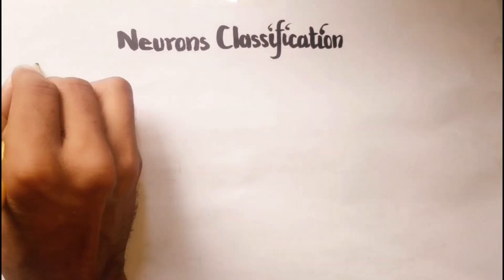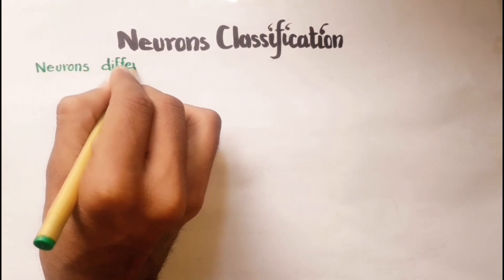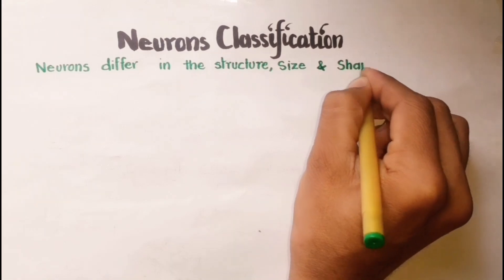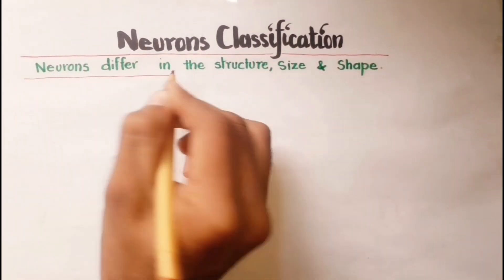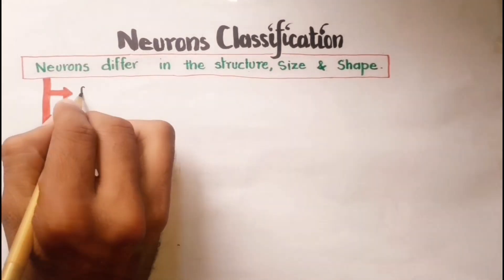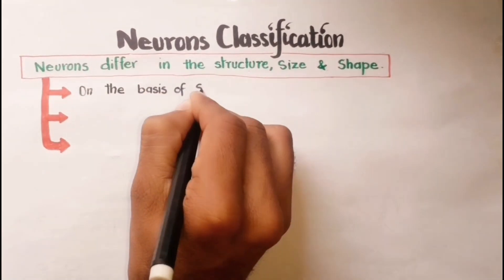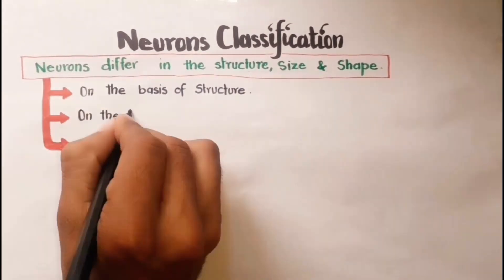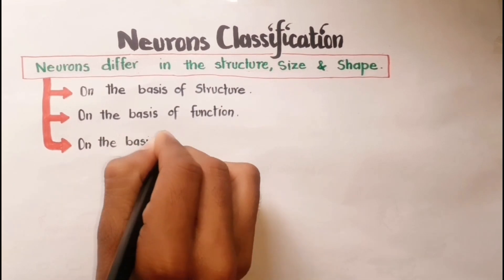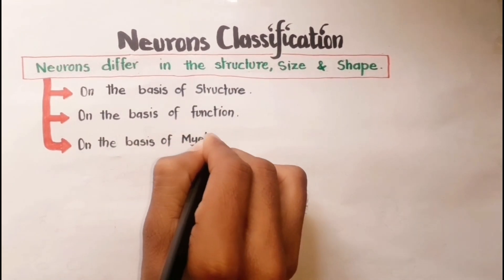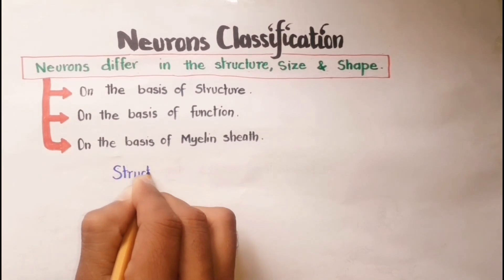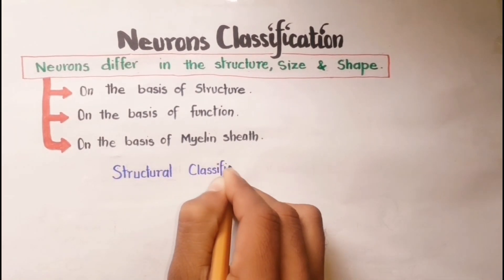Neurons differ in the structure, size, and shape of their cell bodies, which is why all neurons are not the same. They can be divided on the basis of structure, on the basis of function, and on the basis of myelin sheath presence around the axon of the neuron.